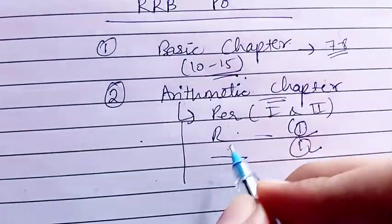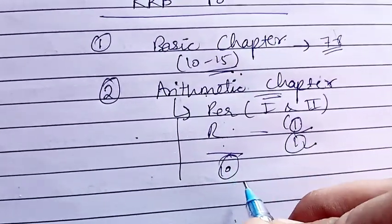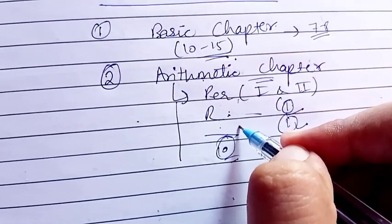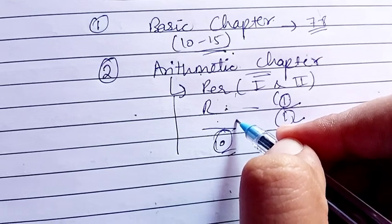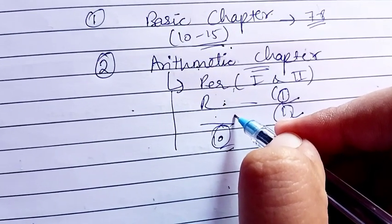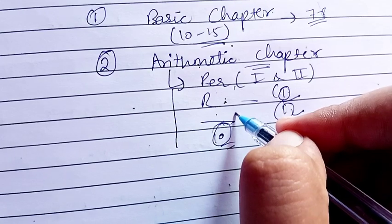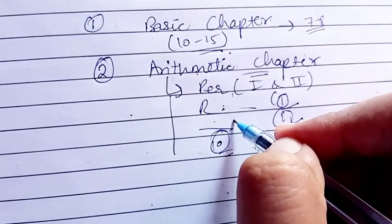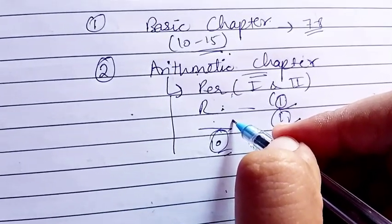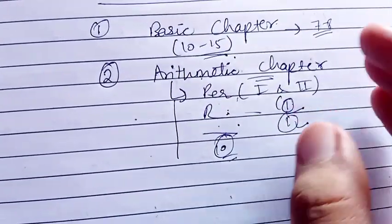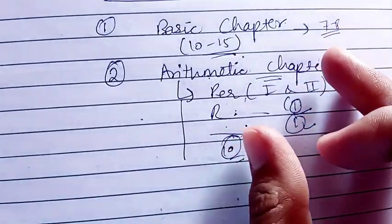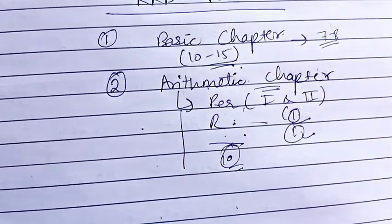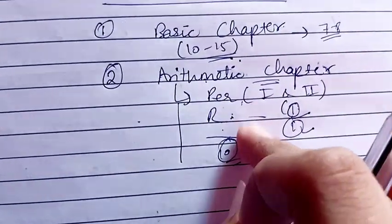Try to make the first 10 chapters very strong: percentage, ratio and proportion, average, simple interest, compound interest, time and work, time speed and distance, and pipe and cistern, among two or three more important chapters. These are the core of arithmetic. If you skip these chapters, you won't be able to clear the cutoff in quants, so please pay extra attention to them.